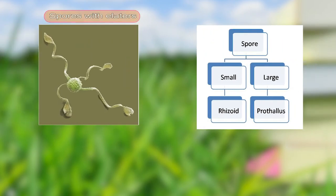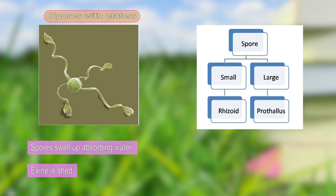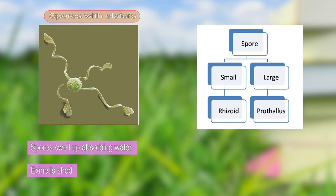The spores are formed inside the sporangia. The spore of Equisetum is of a peculiar type — there are four ribbon-like structures terminated into a spoon-like or spatulate end. The spore has four layers: intine, exine, and two other layers. Between the intine and exine is a middle layer, and the outermost layer forms these ribbon-like structures known as elaters.